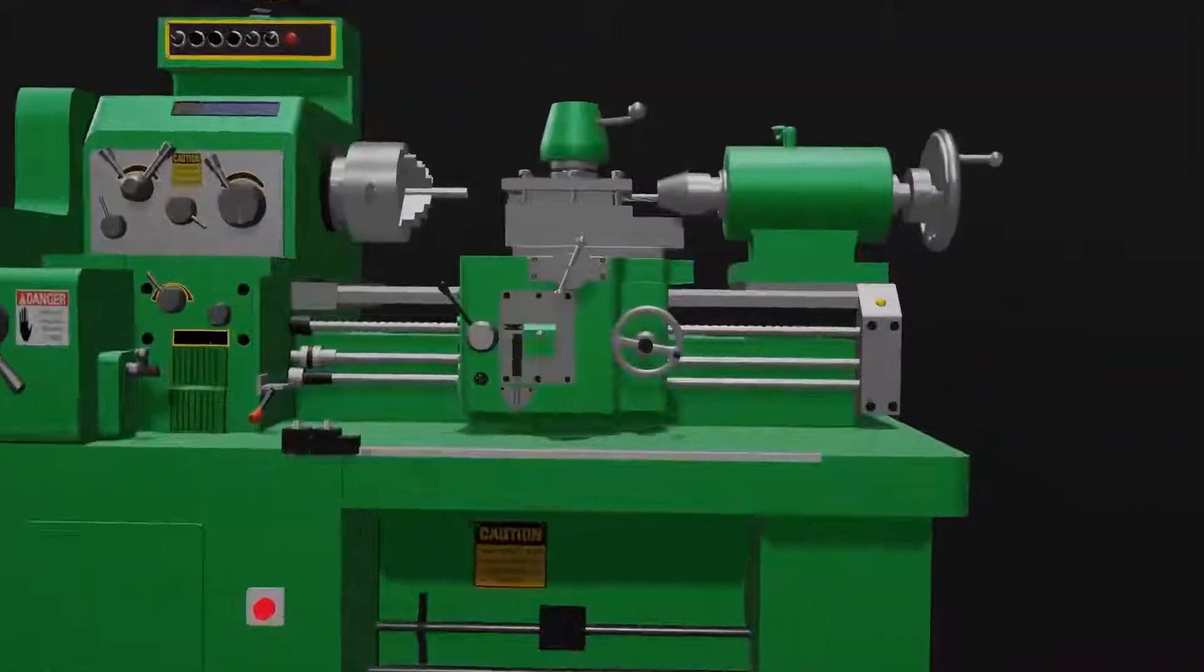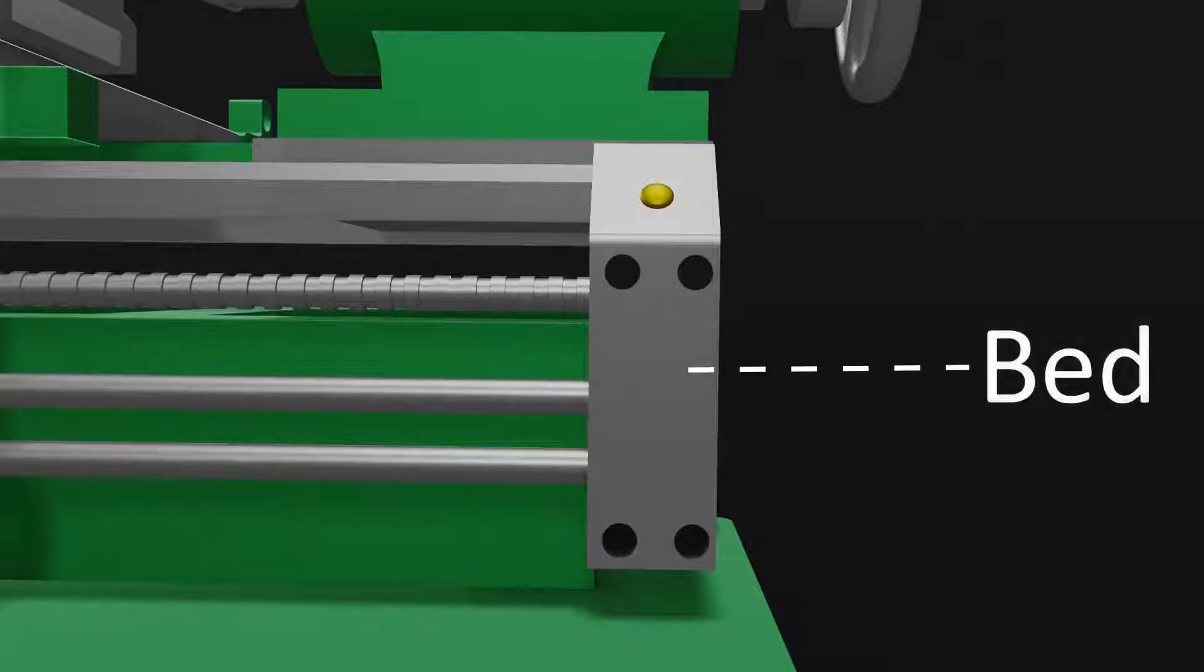The components of lathe are Bed. This is usually a horizontal beam that holds the chips and the swarf.